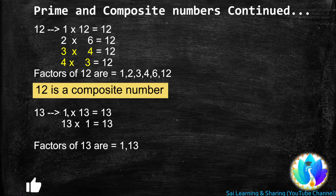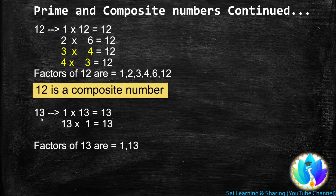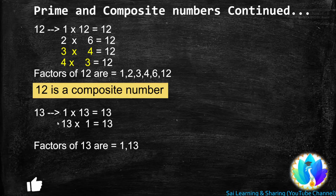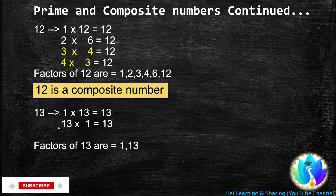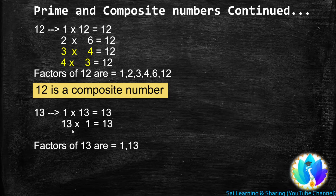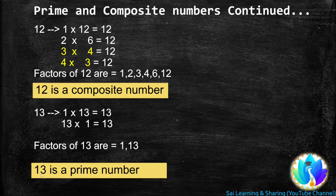Next, 13. 1 is a factor of every number, so 1 × 13 = 13. 13 is not a multiple of 2 because it is not an even number. 13 is not a multiple of 3 — when we add the digits we get 4, and 4 is not a multiple of 3. At last, 13 × 1 = 13. We stop here because 1 and 13 have occurred earlier. So the factors of 13 are 1 and 13, and 13 is a prime number.